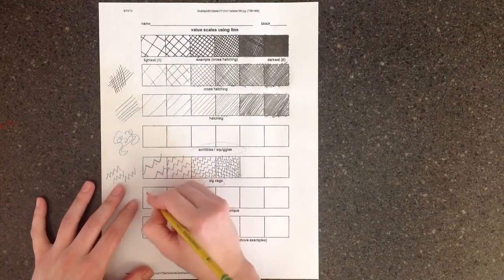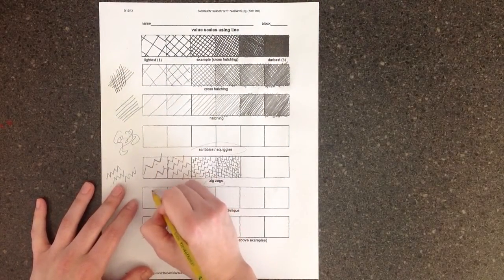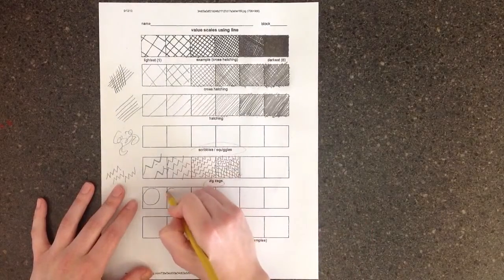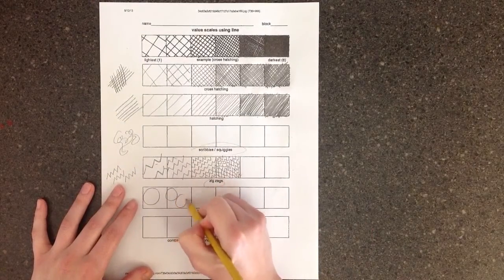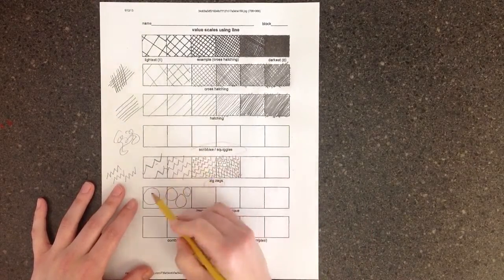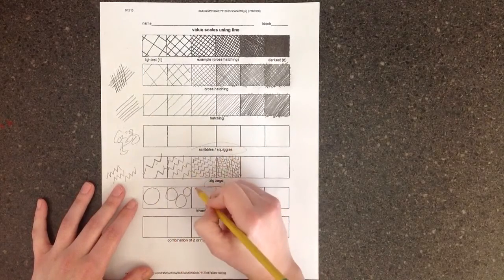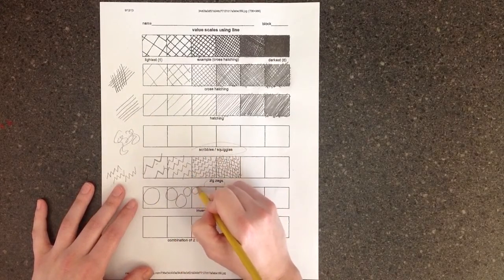You can do whatever you want as long as it's only using line. And I might draw circles. So for this one, size, again, is going to be a factor in how dark the value is going to get.